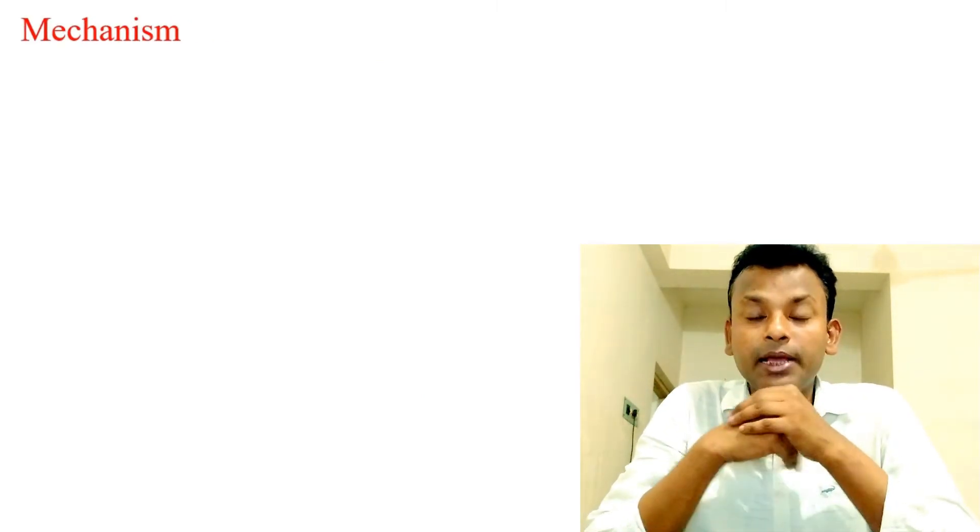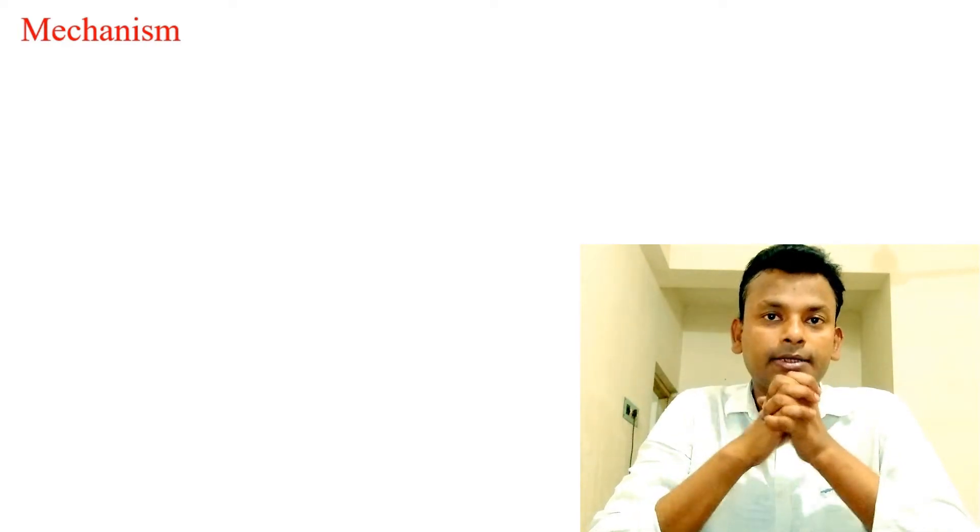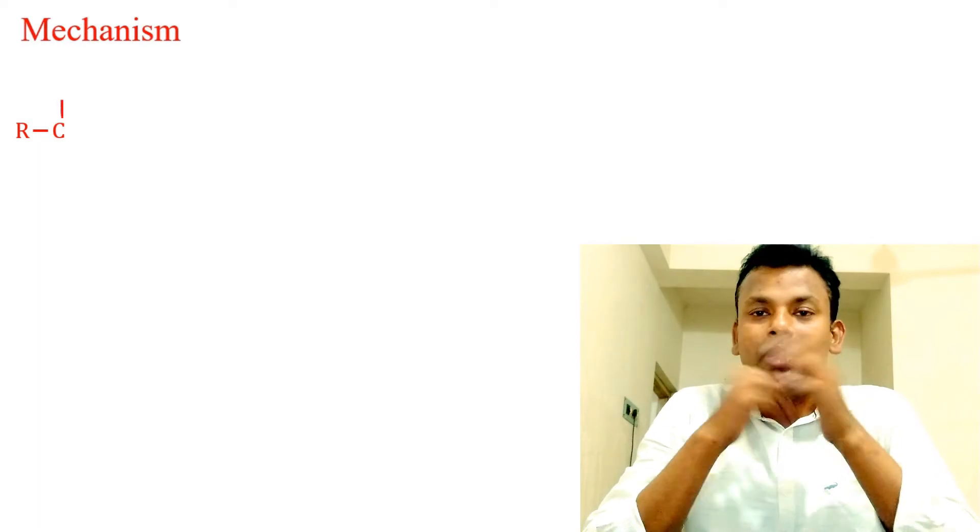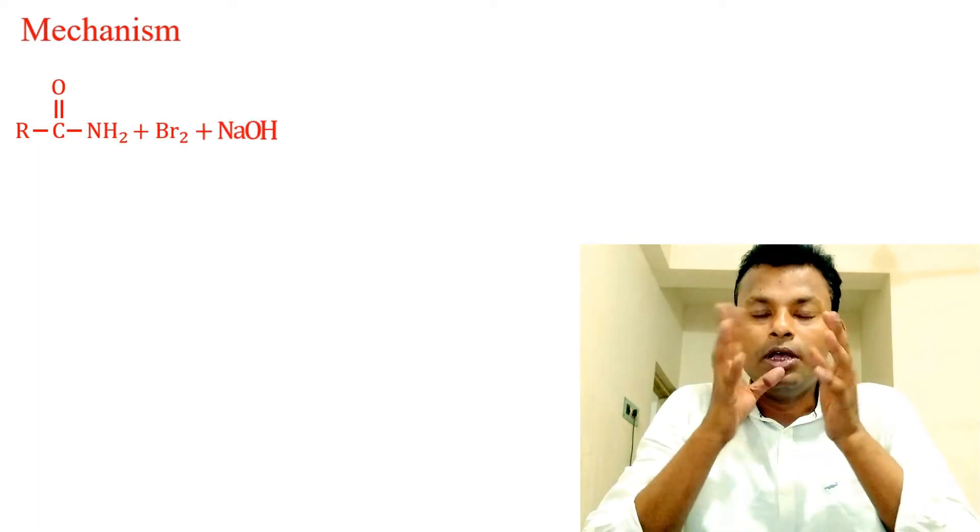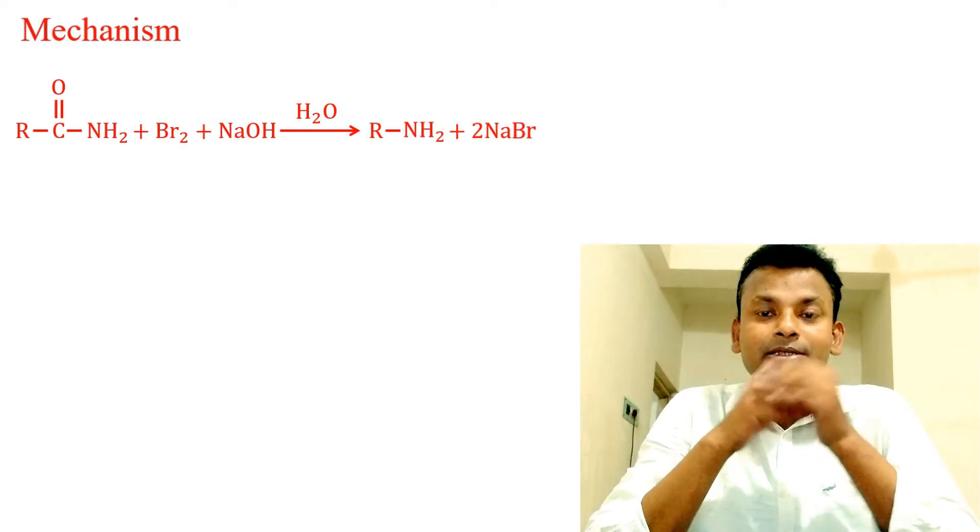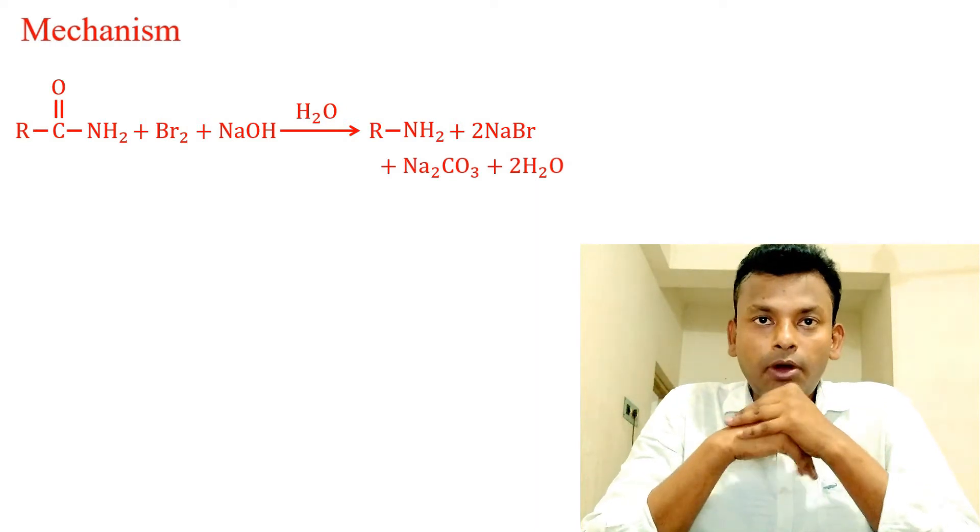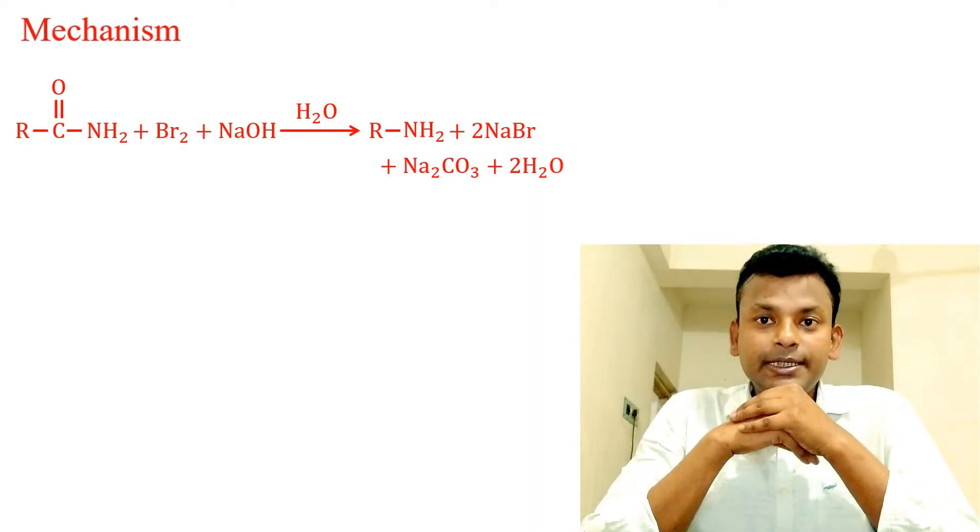Mechanism of Hofmann bromide or Hofmann degradation reaction: RCONH2 plus Br2 plus NaOH plus H2O gives RNH2 plus 2NaBr plus Na2CO3 plus 2H2O.